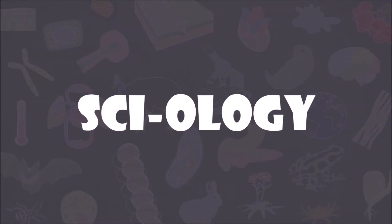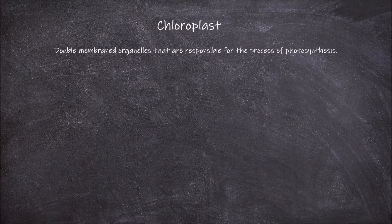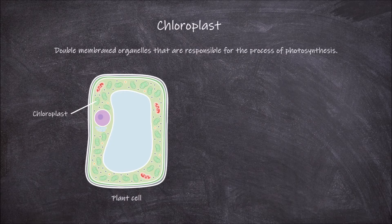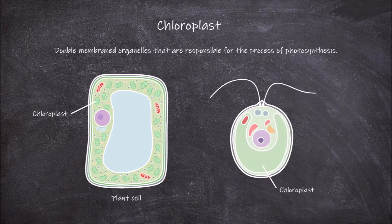Welcome back to my channel. In today's video we're going to go over the structure and function of the chloroplast. Chloroplasts are double-membraned organelles that are responsible for the process of photosynthesis. They are found in plant cells and also in photosynthetic eukaryotic algae.